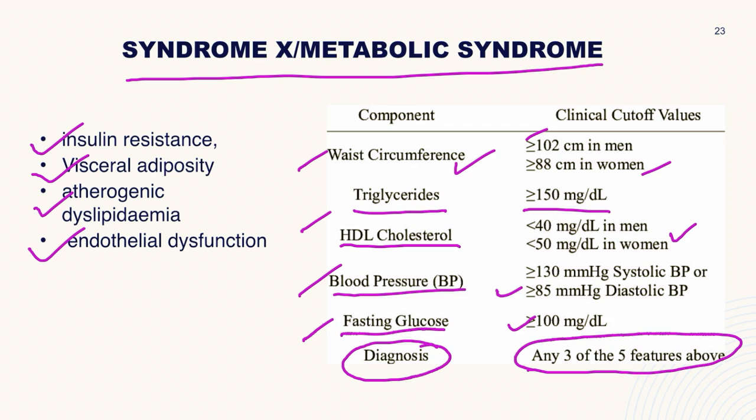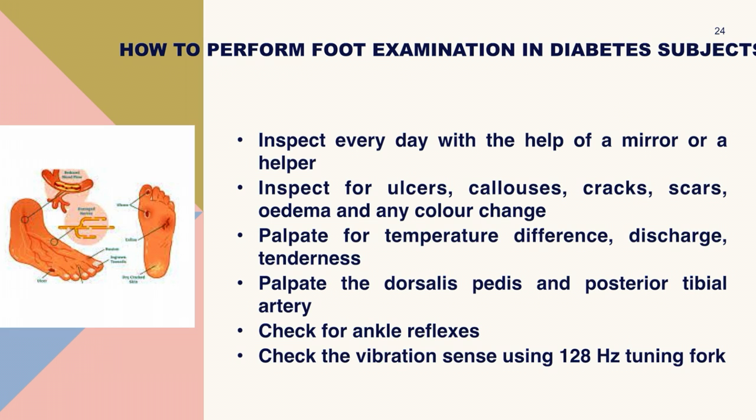There are 5 parameters in total for metabolic syndrome — including 2 lipid profile parameters — and any 3 out of 5 features will diagnose syndrome X.